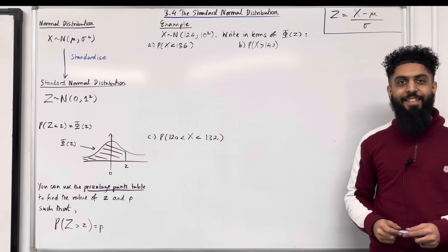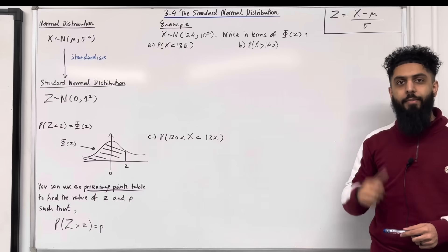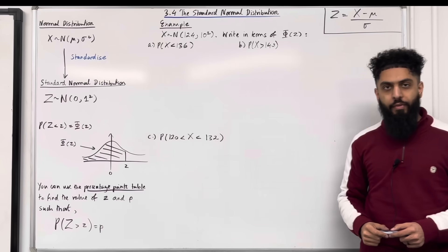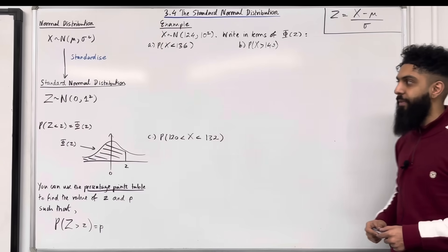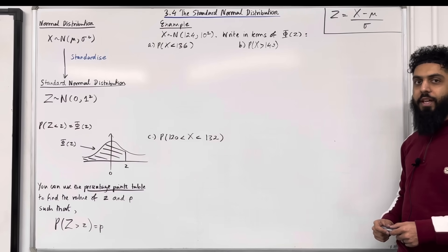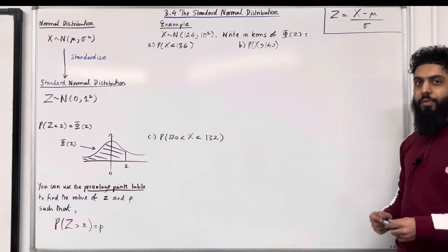Welcome back. In this YouTube video, I'm looking at 3.4, the standard normal distribution. 3.4 represents Chapter 3, Section 4 of the Pearson A-Level Statistics Master 2 textbook. Let's go through the key facts of this section.